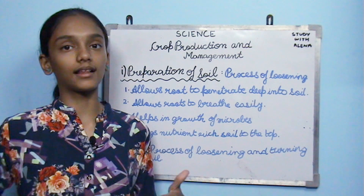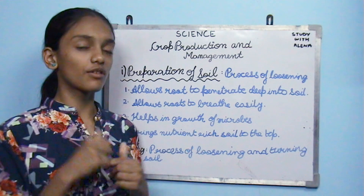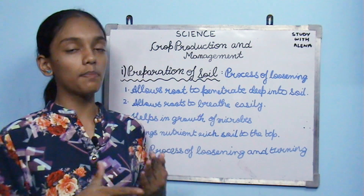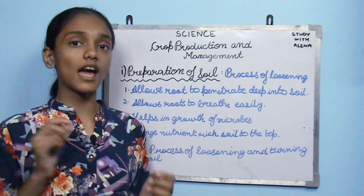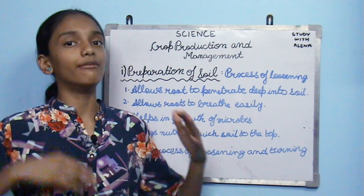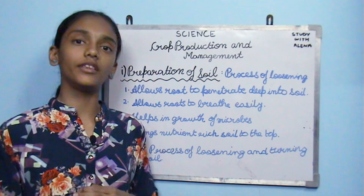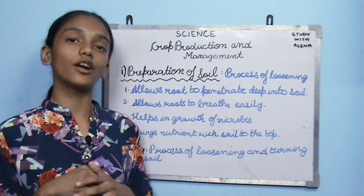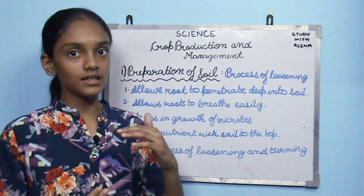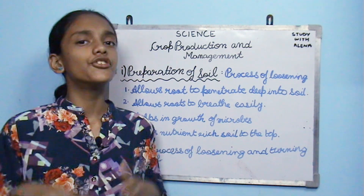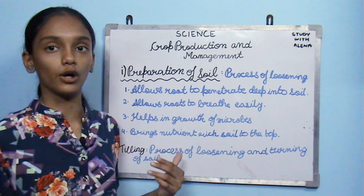The first step in agricultural practices is preparation of soil. We break down clumps, turn the soil, and prepare it fully. The advantages are: roots can penetrate deep into the soil since clumps are broken down; roots can also breathe easily because air trapped in the soil is released; and it promotes the growth of microbes, which add humus to the soil — that is why microbes are called the farmer's friend.